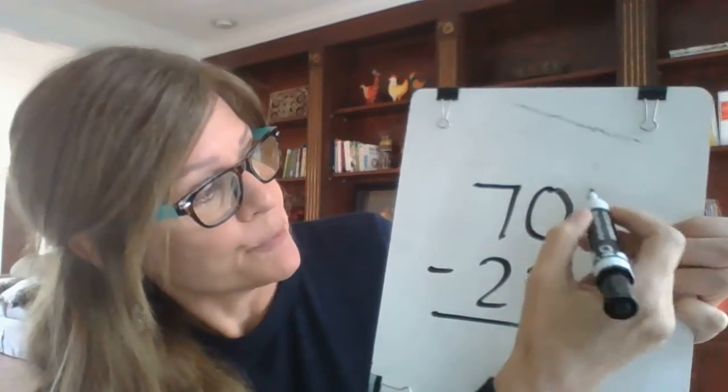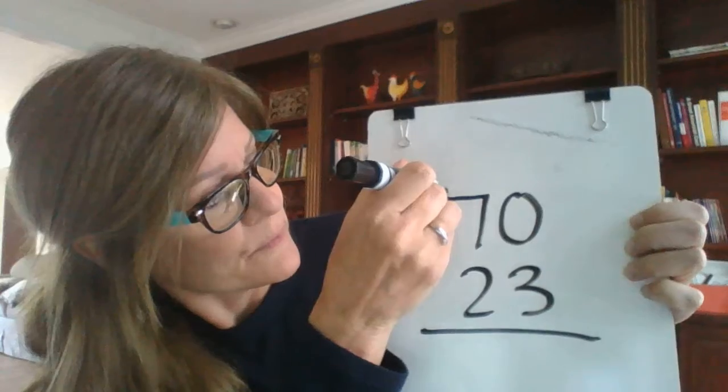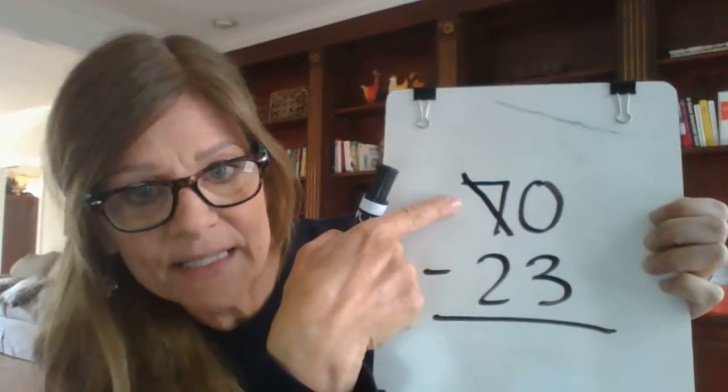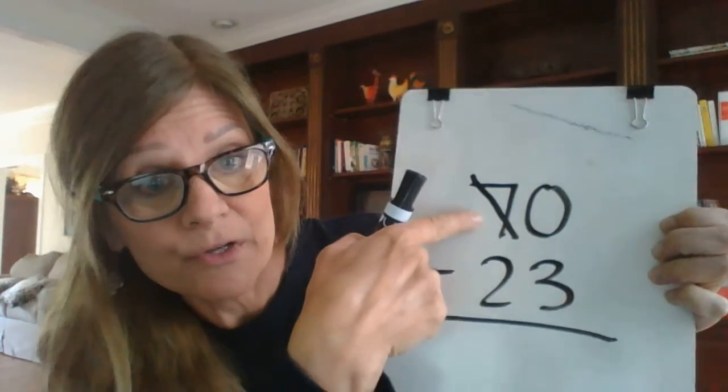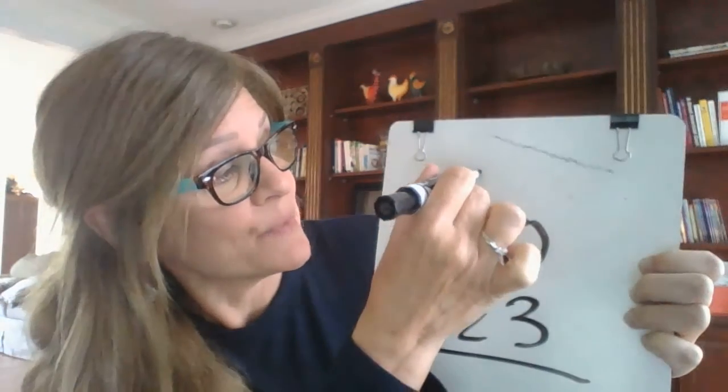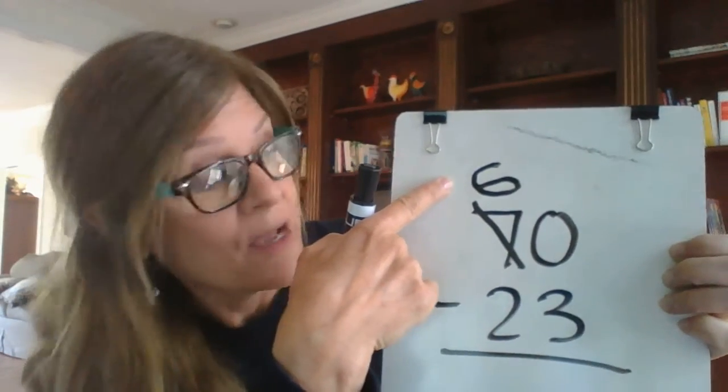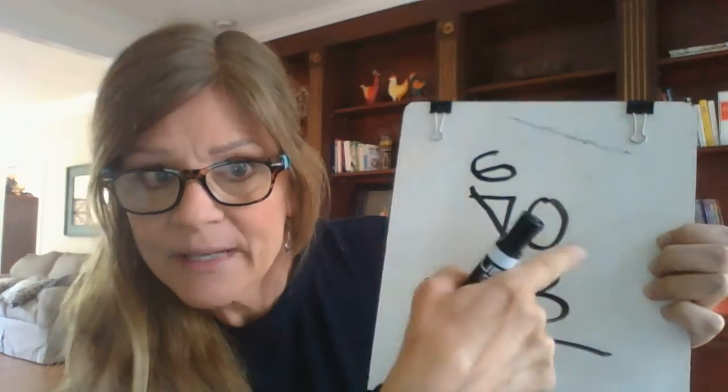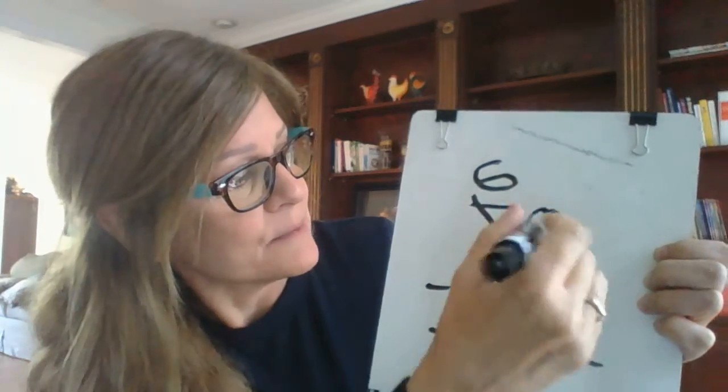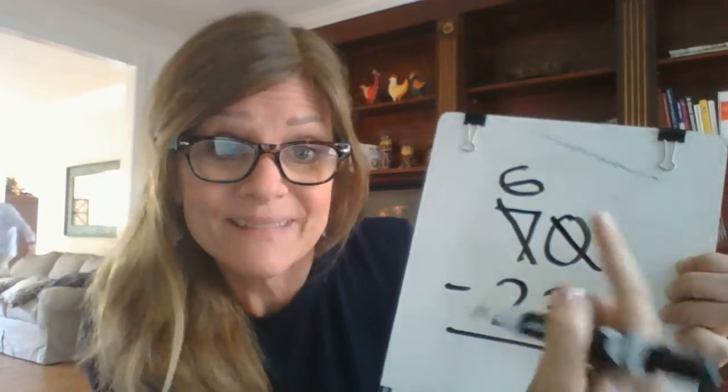So to regroup, we're going to go over to our tens column. The number 70 has seven tens. We're going to cross out the seven. We're going to take one of those tens away. If we have seven tens and we take one away, we're going to have six tens left. What are we going to do with that ten? We're going to add it over here to our ones column. So we're going to cross out our zero. Zero plus ten is ten.